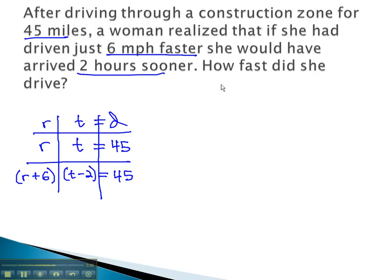You can see we have a simultaneous product out of our table: rate times time equals 45, and rate plus 6 times time minus 2 equals 45 as well.